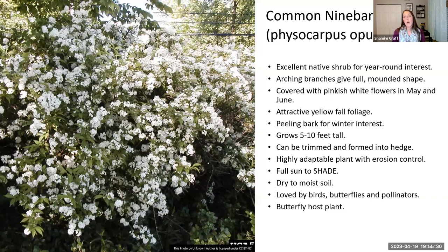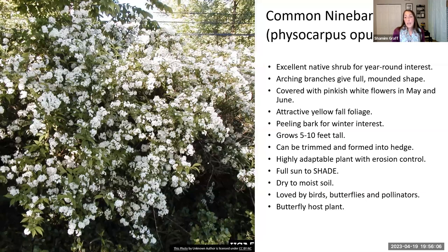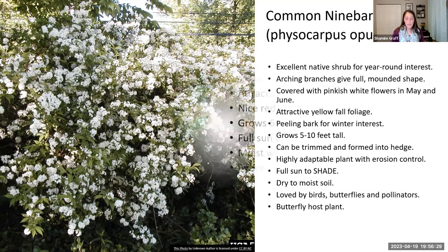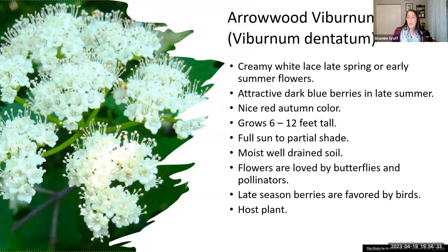Common ninebark can be a larger shrub, up to 10 feet tall, but it's just beautiful and unique all year round. In early spring it has gorgeous pinky-white flowers; in fall you get yellow foliage; and in winter, the bark peels to give you visual interest year-round. If it's a bit too much plant, you can trim it back and keep it as a neat hedge. It can do full sun to shade, everything in between, and tolerates dry to moist soils. It's loved by birds, butterflies, and all sorts of pollinators.